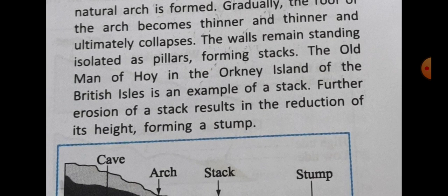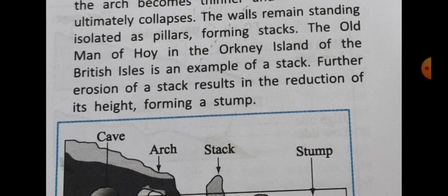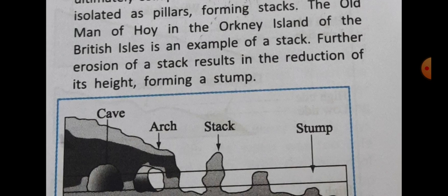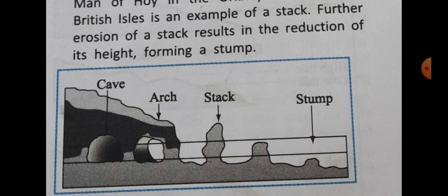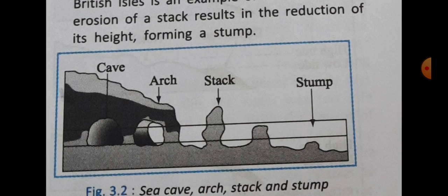Gradually the roof of the arc becomes thinner and thinner and ultimately collapses. The walls remain standing in isolation as pillars, forming stacks. The Old Man of Hoy in the Orkney Islands of the British Isles is an example of a stack. Further erosion of a stack results in the reduction of its height, forming a stump. A diagram is given here showing caves, arcs, stacks, and stumps.